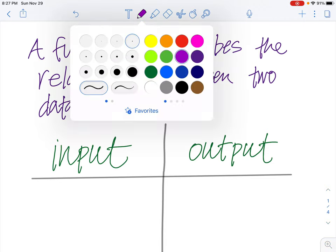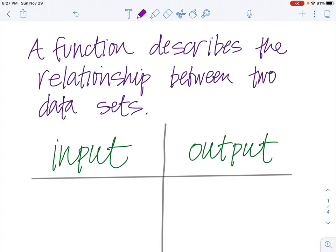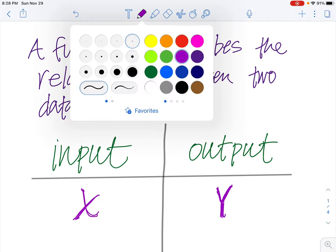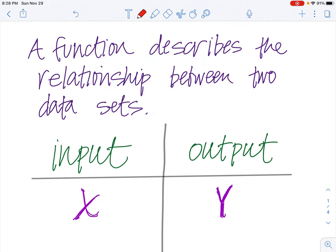In math, we always use this variable, x, to represent the input of a function. And then we use this variable, y, to represent the output of a function. X is what goes in, and y is what goes out. So if you see an x variable, know that that's the input of the function. If you see a y variable, know that that's the output of the function.